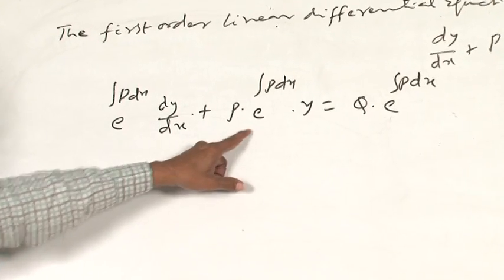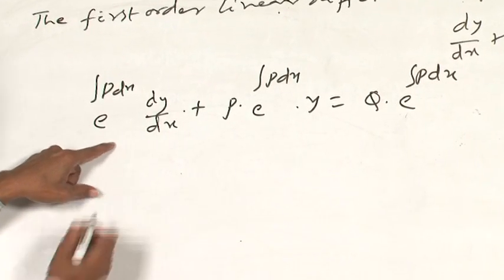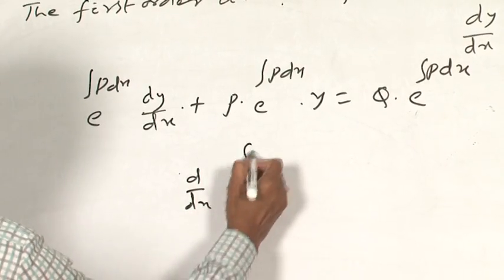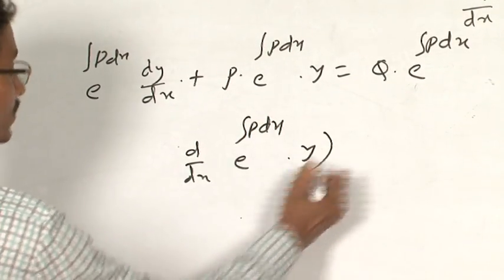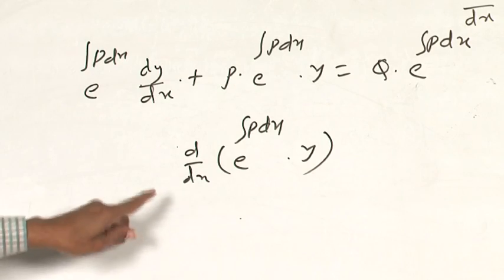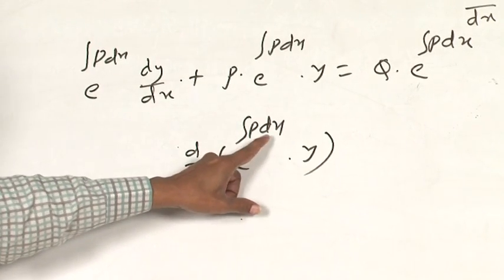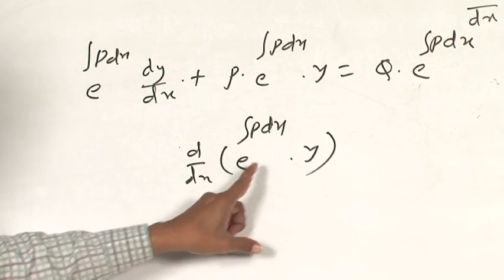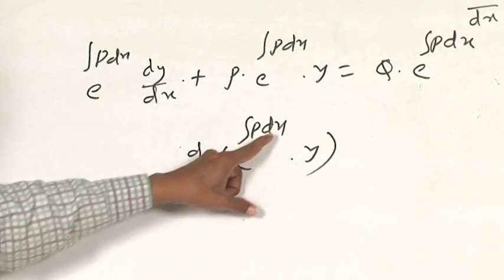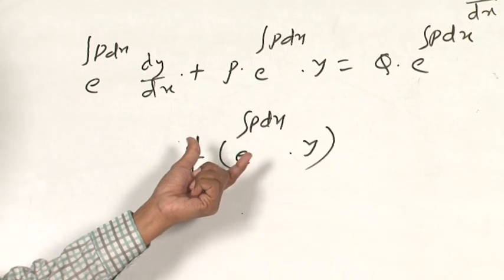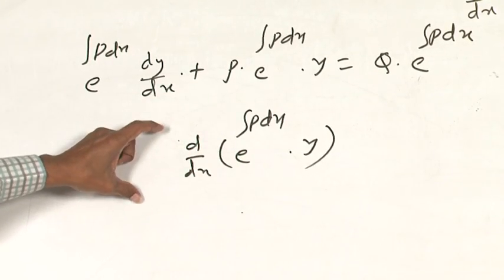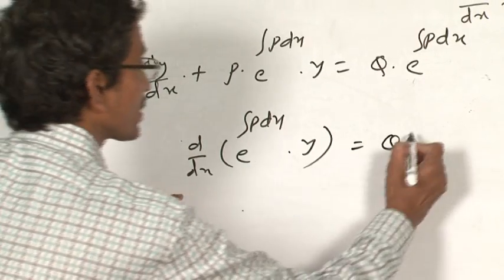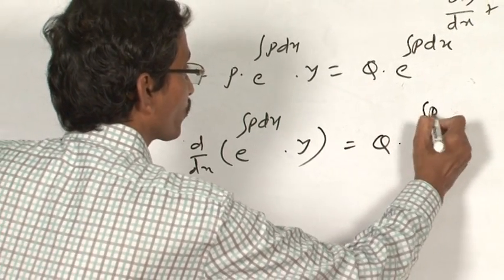The LHS of the given equation becomes the derivative of e power integral P dx times y. Observe: e power integral P dx times dy by dx, plus y times P times e power integral P dx — this is differentiation by the product rule. So I can write the LHS as the derivative of that product, equal to Q times e power integral P dx.